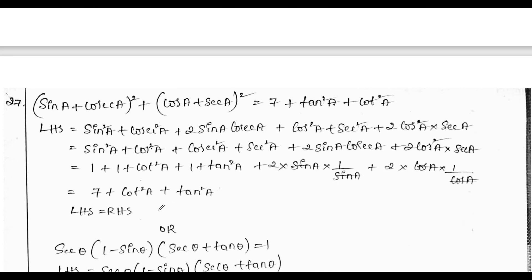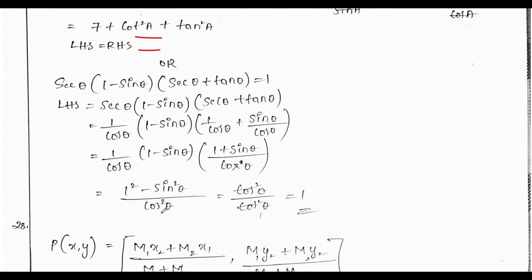The next question is a very simple trigonometry question using sine plus a plus b whole square formula. After using all the three identities, we get RHS equals 7 plus cot square a plus tan square b.